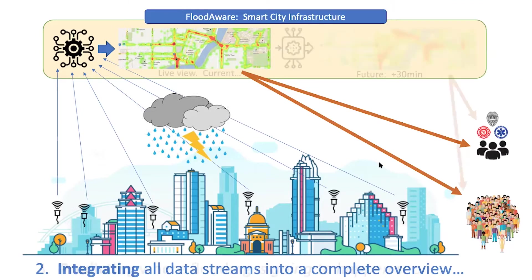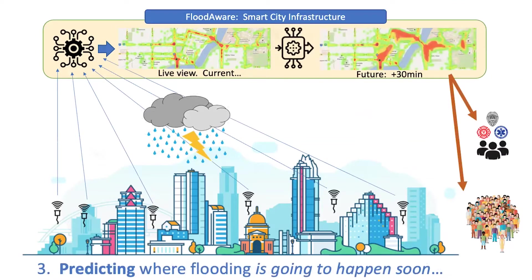It then has to communicate that back to the stakeholders — the city authorities as well as the citizens — to keep them informed about flooding. That's the integrating part. The next thing a smart city would do is run a smart modeling component that takes all the live information, runs it through a model, and tells you where it's going to be flooding in 30 minutes. So you can see the difference between the current picture and the future picture — hey, in 30 minutes there's going to be substantially more flooding — and it communicates that back to citizens and first responders.